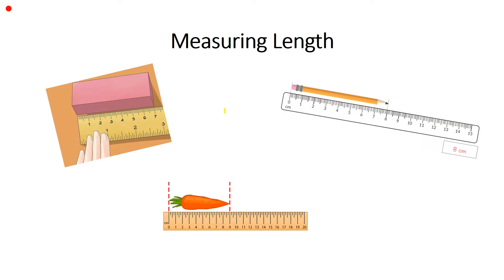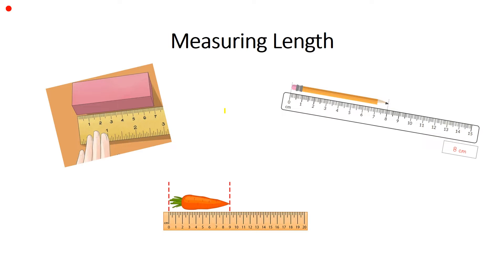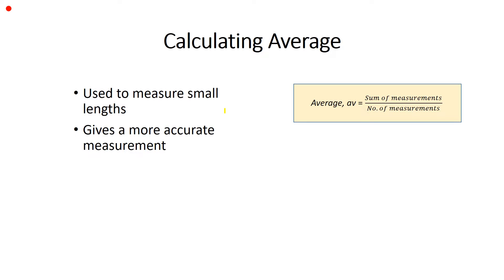The precision of your measurement depends on the precision of the measuring tool, which is the ruler. Sometimes the measuring scale of the ruler is not accurate, making our measurement less precise. So there are a few ways to correct this issue, and one of these ways is to calculate the average. An average value is used to measure small lengths and usually gives a more accurate measurement compared to just taking one measurement. The formula is the sum of measurements divided by the number of measurements.